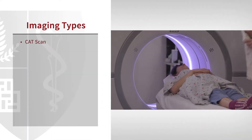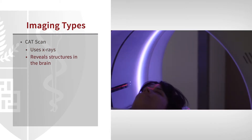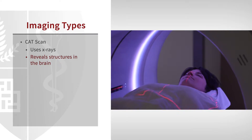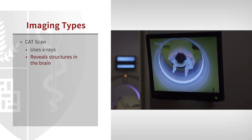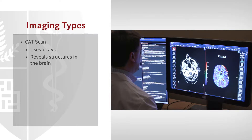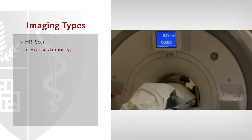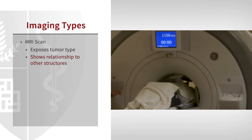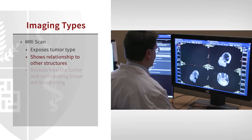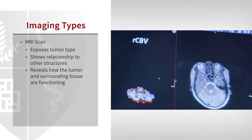Different types of imaging studies can be used. The first is a CAT scan, which is often the first-step exam done in the acute setting when a patient has their first few symptoms, to get an idea of whether there is a brain tumor, where it's located, and whether it has bled. The next set of exams is an MRI scan, which gives us much more information about the type of brain tumor, its location, and its relationship to important structures that the surgeon needs to know for surgery. We can also get functional information about the tumor and the normal brain tissue surrounding it.